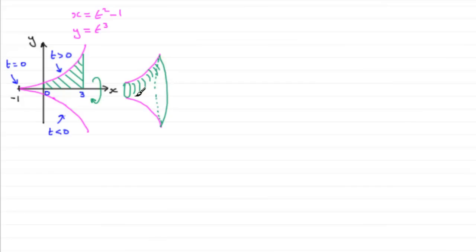We should already know that to find the volume of revolution about the x-axis, we use this formula: V = π ∫ y² dx. The limits are x limits from x₁ to x₂. In our example, x₁ = 0 and x₂ = 3.